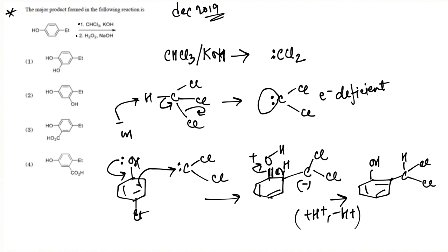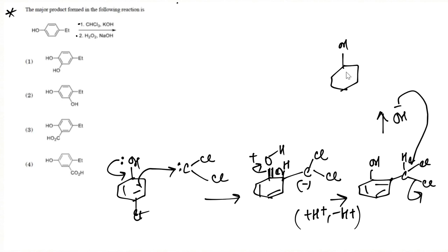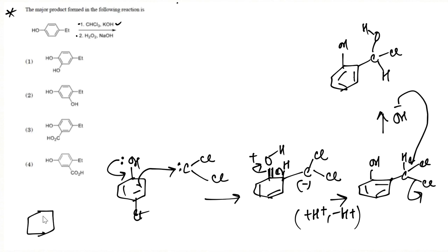This is the Reimer-Tiemann reaction. In the next step, we again have a base — OH⁻ — which attacks this carbon and removes one of the chlorine groups. In the presence of the base, the oxygen exists as O⁻, so in most mechanisms you are going to see this intermediate with a negative oxygen, basically the phenolate ion.